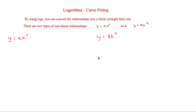In this video we are looking at logarithms and curve fitting. By using logs you can convert a non-linear relationship into a linear, straight-line one. There are two main types of non-linear relationships: y = ax^n and y = kb^x. Let's see how to convert these into a linear relationship, which is easier to plot on a graph.